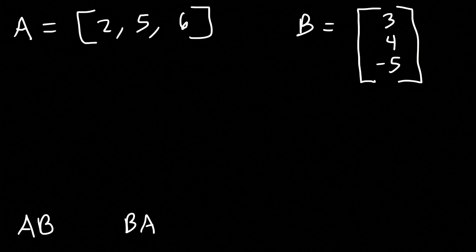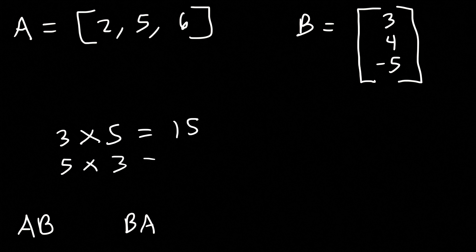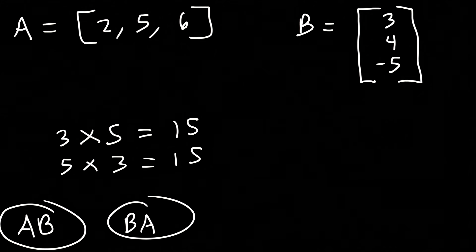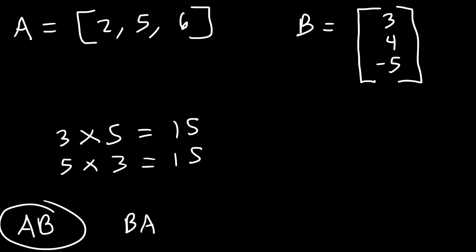In regular math, 3 times 5 is 15 and 5 times 3 is also 15. But when dealing with matrices, the order matters. AB and BA will not be the same, so keep that in mind. AB means we take matrix A and multiply it by B in that order. BA means we start with matrix B and multiply it by A.